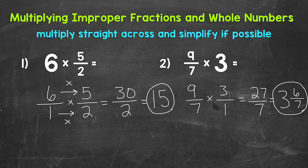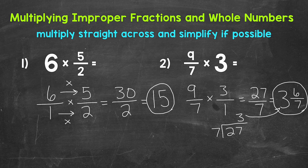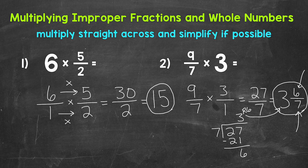Just for a quick recap of how we went from the improper fraction 27 sevenths to the mixed number 3 and 6 sevenths, I'll work this out by hand. We did 27 divided by 7. How many whole groups of 7 in 27? 3 whole groups — that's the whole number part. 3 times 7 is 21. Subtract: 27 minus 21 is 6. So we get a remainder of 6. That remainder is the numerator of the fractional part, and we keep the denominator of 7 the same.